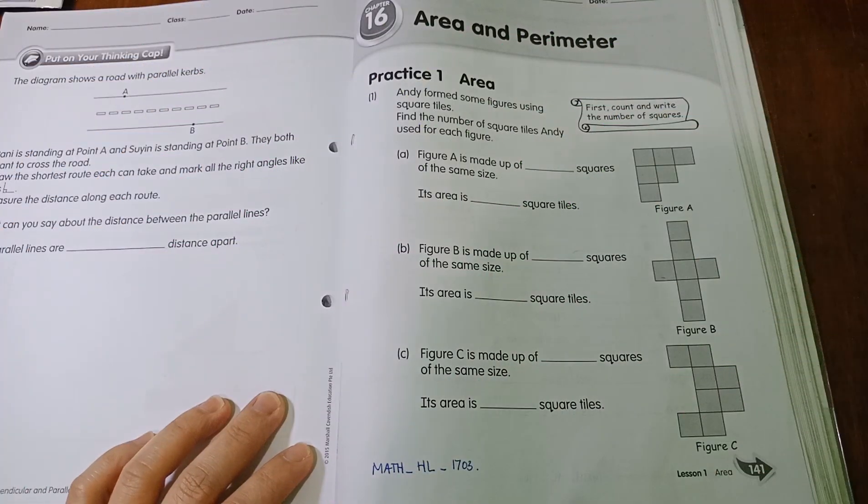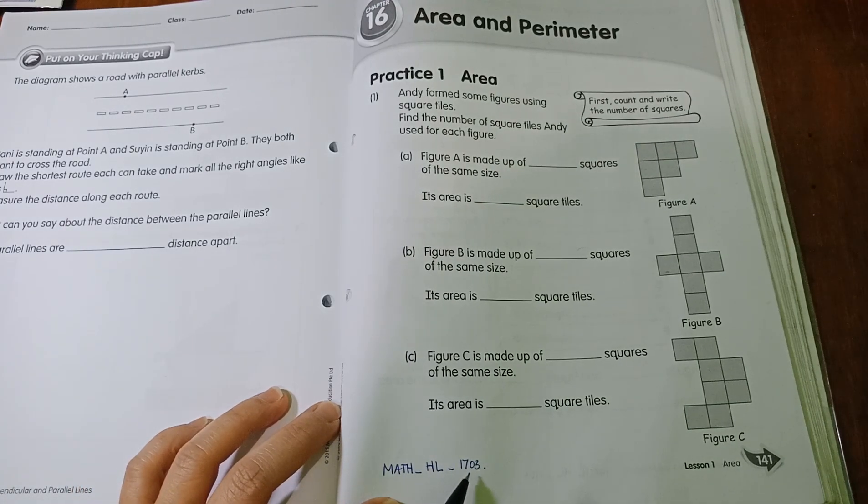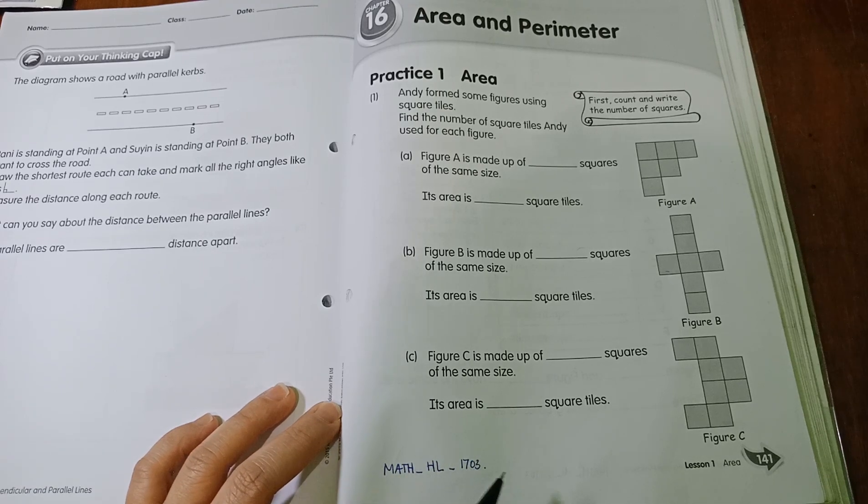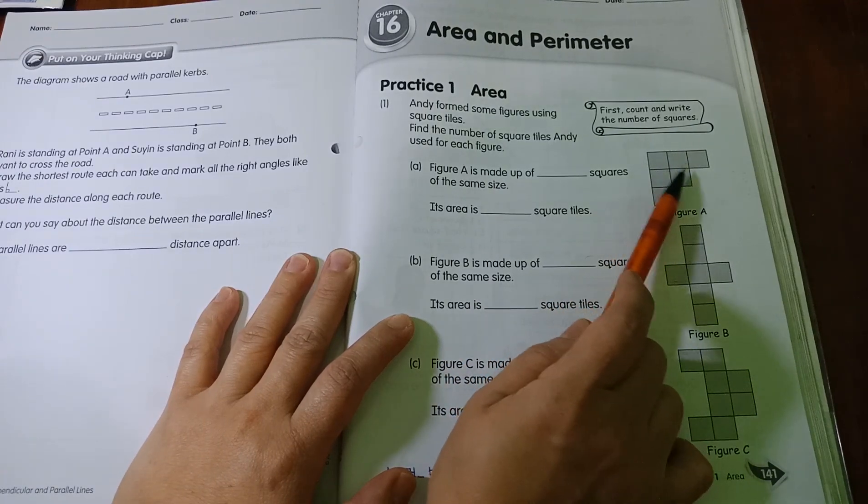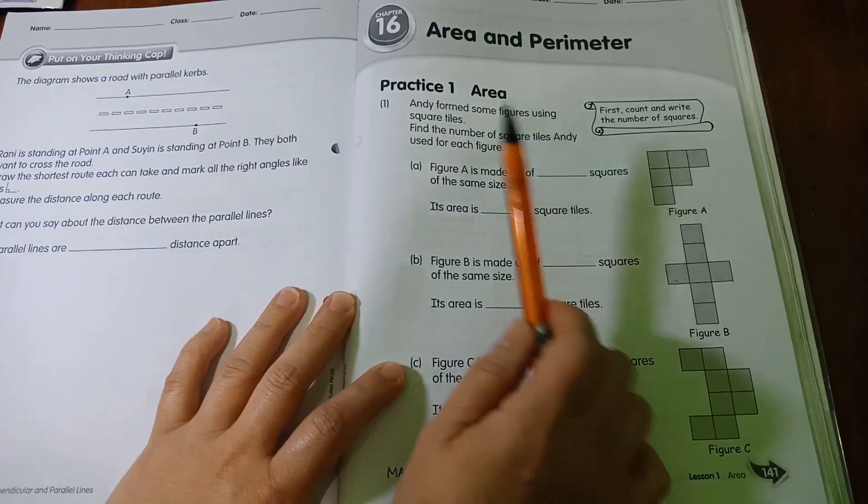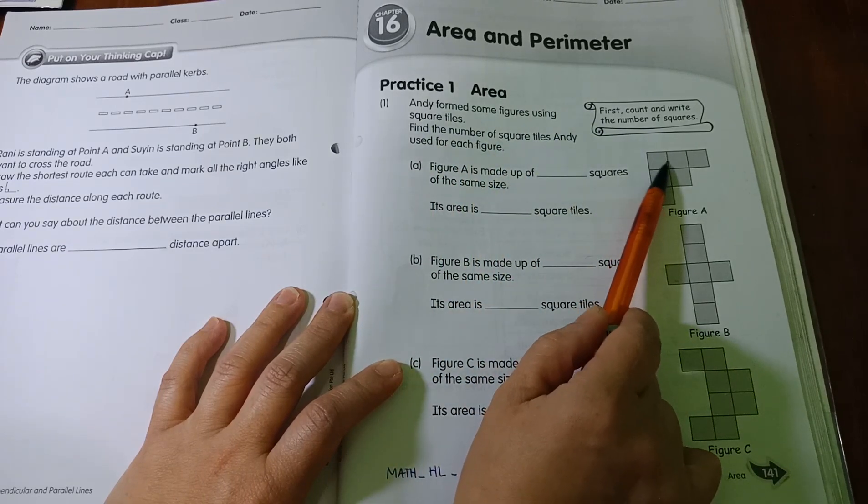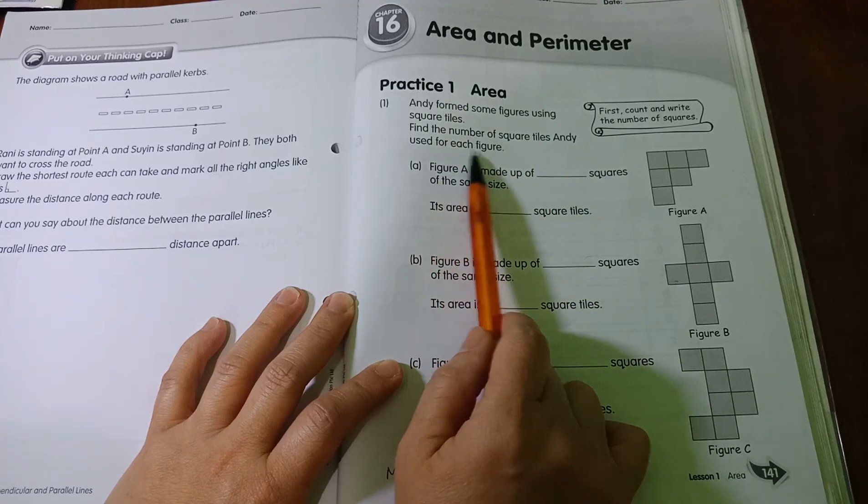Hi everyone, today I'm going to discuss our homework that's been given on March 17. You can find the paper and you can find the date that the assignment was sent. Now, area is about something that covers the shape or the figure. So, for this one, Andy forms some figures using square tiles. This is what we call the square tile. Find the number of square tiles Andy used for each figure.